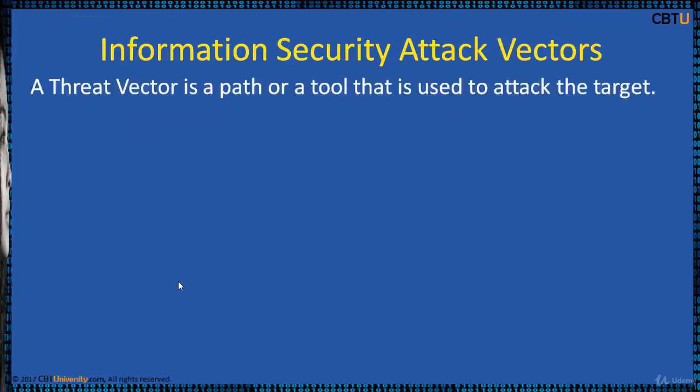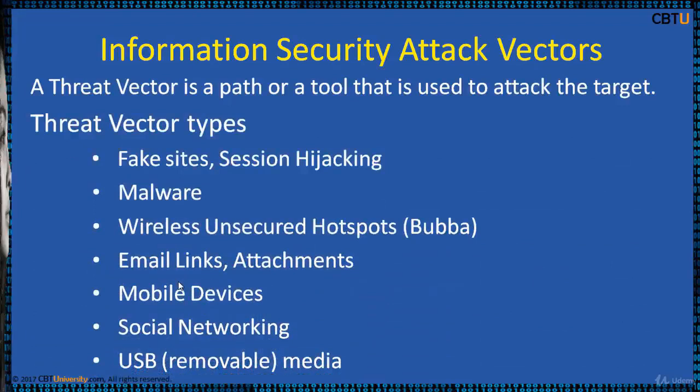Information Security Attack Vectors: a threat vector is a path or a tool that is used to attack the target. Threat vector types include: Fake Sites, Session Hijacking, Malware, Wireless Unsecured Hotspots, Email Links, Attachments, Mobile Devices, Social Networking, and USB Media.